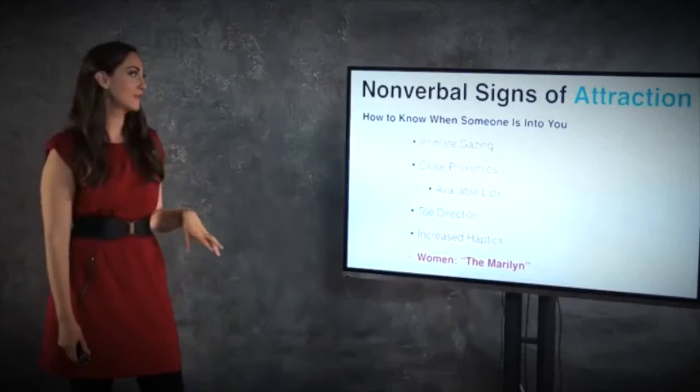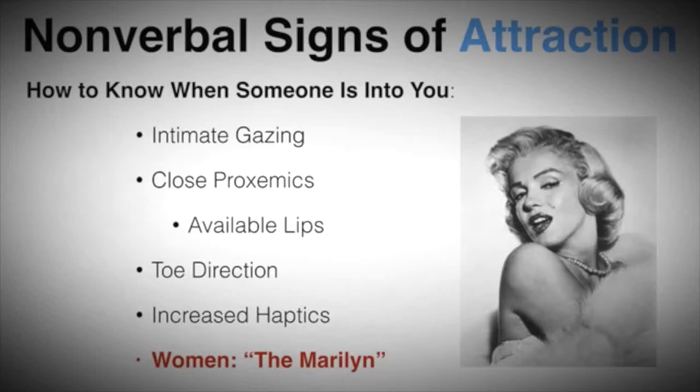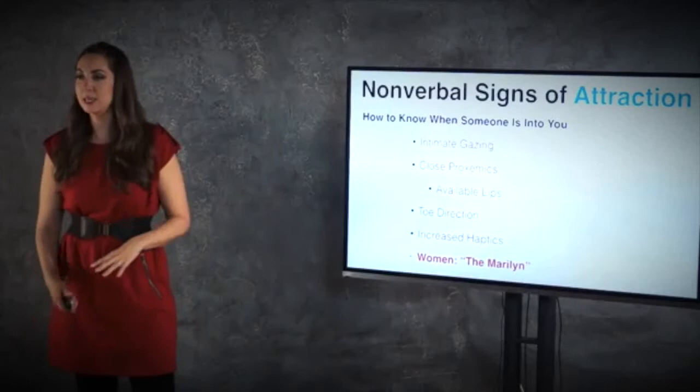So remember these five that we talked about, how to know when someone is into you. So this is just a brief review, right? Intimate gazing, they use close proxemics, they keep their lips available. So we didn't really talk about this one, but a woman who wants to be kissed will always keep her lips available. It usually works with men as well, but women especially, they lean in more. They keep their head out. They're actually shown that they want to have their lips available. They use the toe direction and increased haptics. So they touch more as well as self-touching and preening.